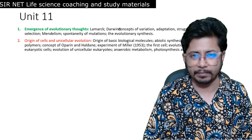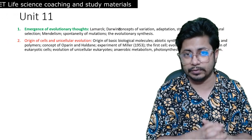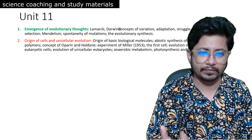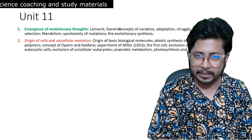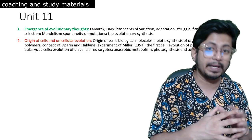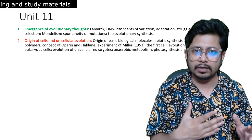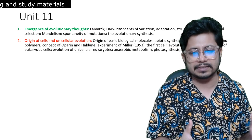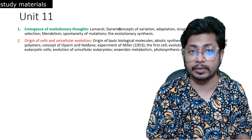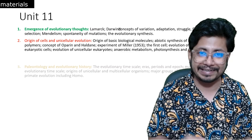Next is the origin of cell and multicellular organisms in evolution. There was a time when they asked a lot of questions from the Urey-Miller experiment and biogenesis theory. But for the last 3-4 CSIR NET examinations, they are not asking many questions from this topic anymore, so it is placed in the red color category.